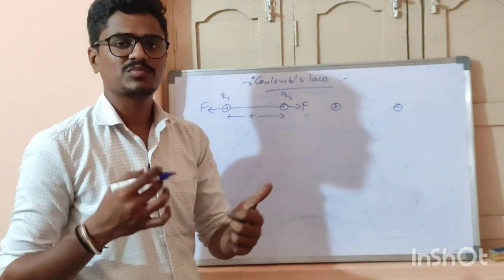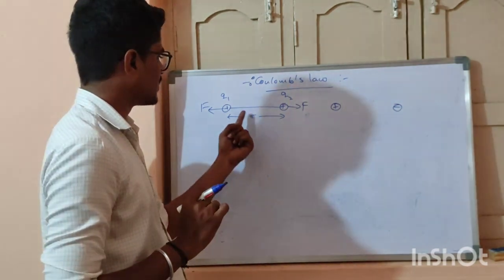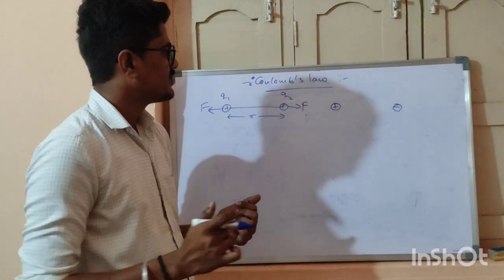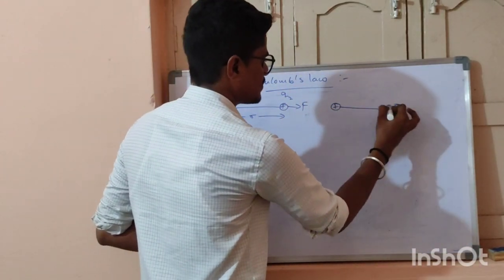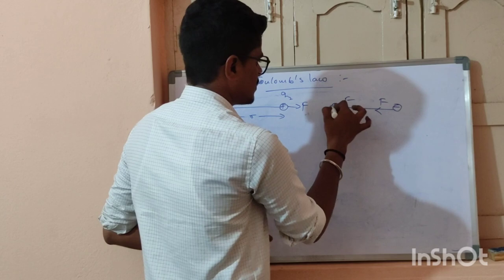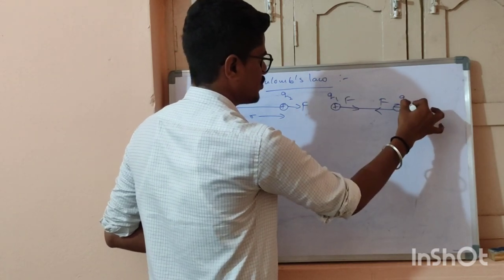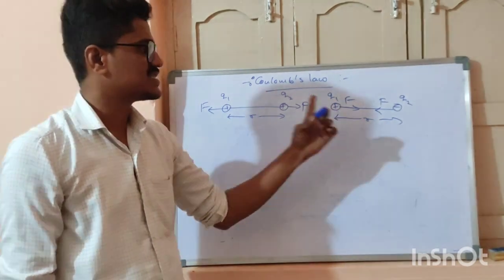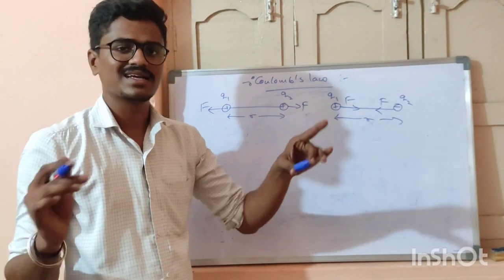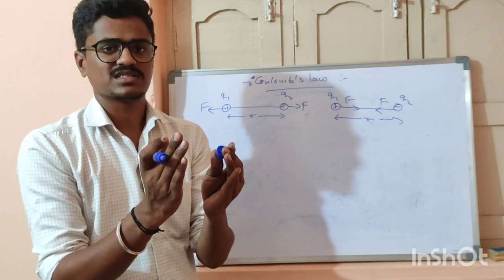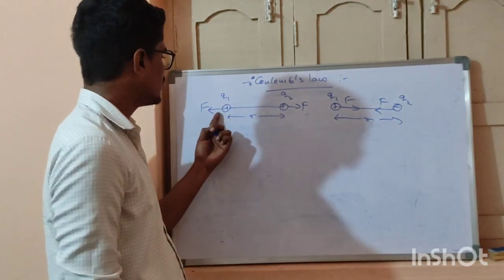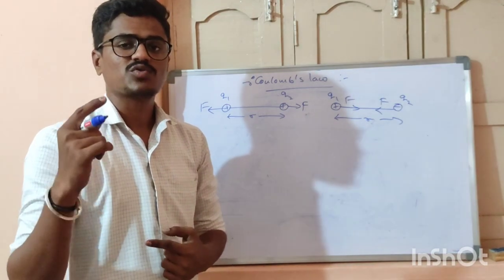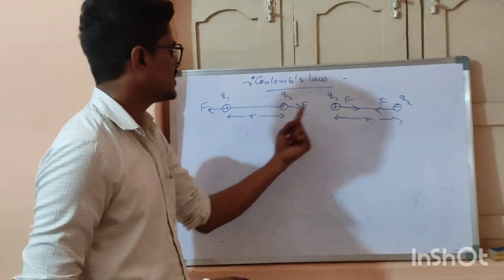The electrostatic force is directly proportional to the product of the magnitudes of the charges, Q1 and Q2. Here you can see the diagrams for repulsion and attraction. It is also inversely proportional to the square of the distance between them — this is the inverse square law.